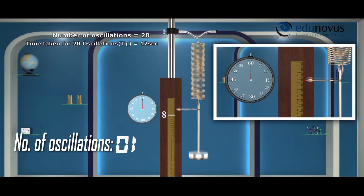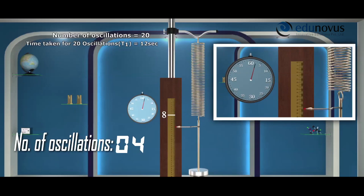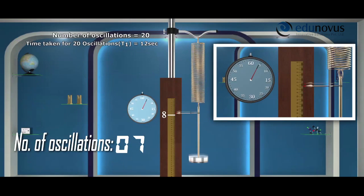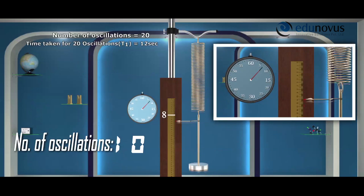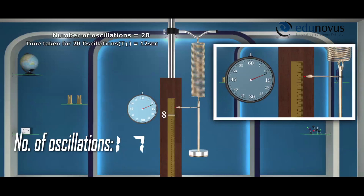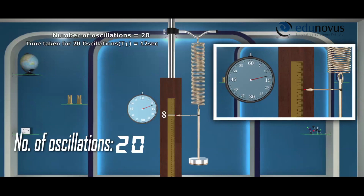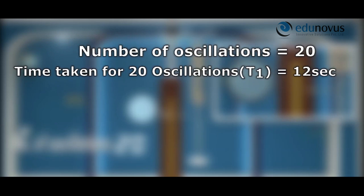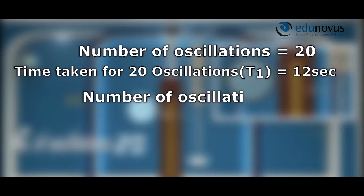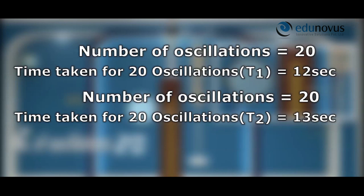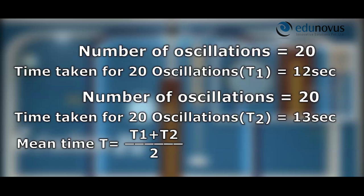Now once again measure the time taken for 20 oscillations. The time taken for 20 oscillations is 13 seconds. Note it down as t2 in the observation table. Now we take the mean of t1 and t2 as the time for 20 oscillations. Therefore T is equal to (12 + 13) / 2, which is 12.5 seconds.